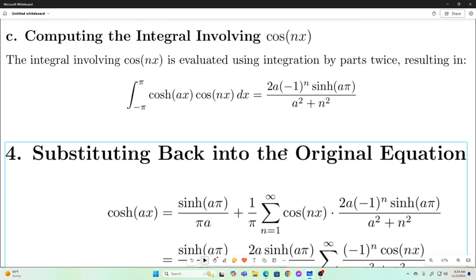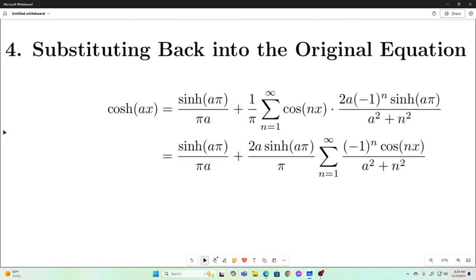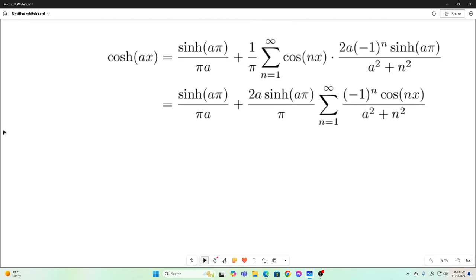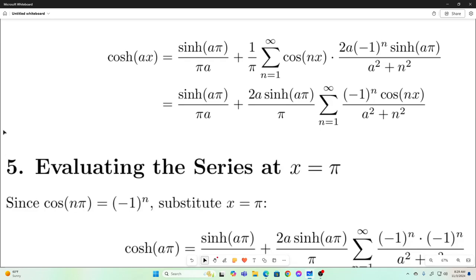All right, so next we just substitute our results for those integrals back into our equation for hyperbolic cosine ax, and this is what we get. I'm not going to verbally explain this. You can follow along if you'd like. And then what we'll do is we will evaluate both sides of this equation at the point x is equal to pi.